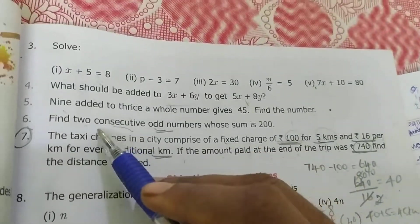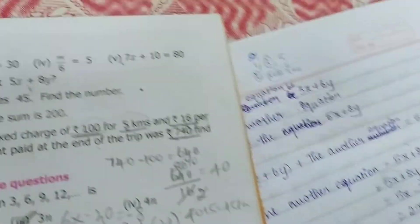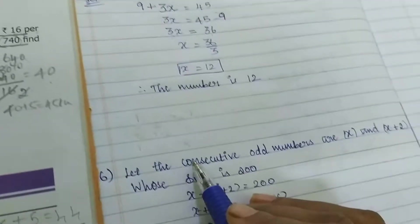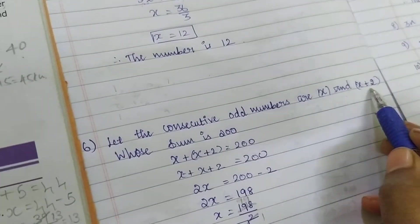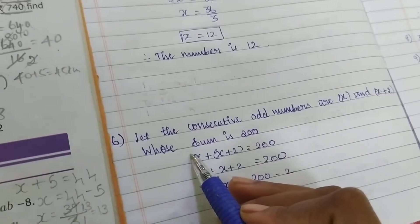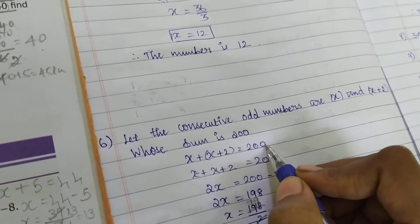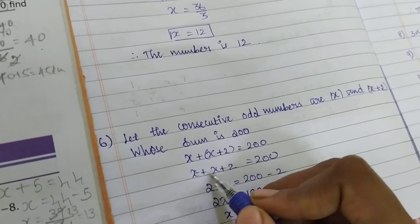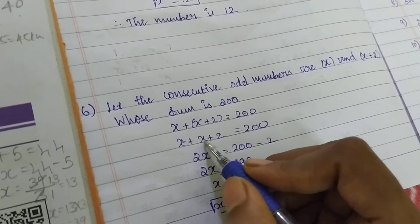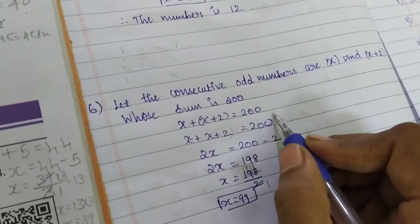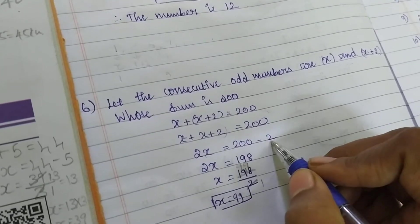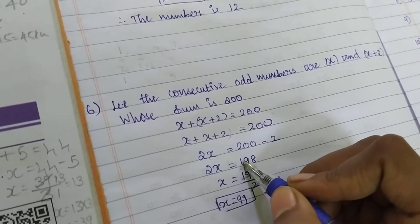But what they are asking is first two consecutive. So first two consecutive means x and x plus two. I am taking the consecutive odd numbers as x and x plus two. So the given addition of that is 200. First term plus second term equals 200. So x plus x plus two equals 200. The addition is 2x. This two is going that place, positive is going that place and negative.